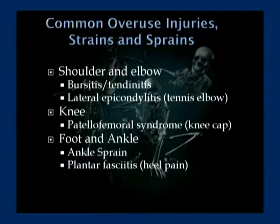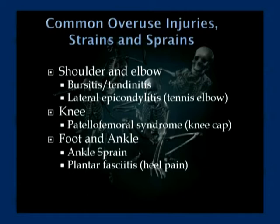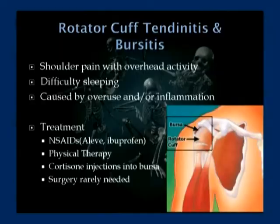We'll go over several common overuse-type injuries, as well as some strains and common sprains. In the shoulder and elbow, we'll talk about bursitis and rotator cuff tendinitis. Around the elbow, lateral epicondylitis — better known as tennis elbow. In the knee, the most common overuse injury is patellofemoral syndrome, basically pain under your kneecap. And in the foot and ankle, we'll talk about ankle sprains and heel pain, or plantar fasciitis.